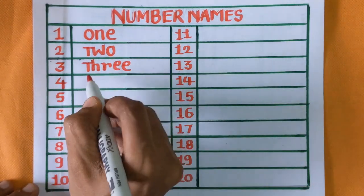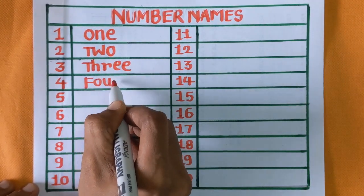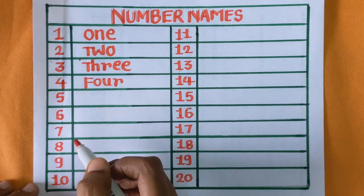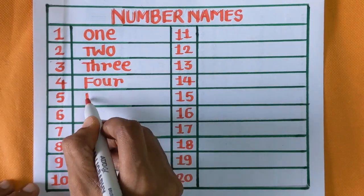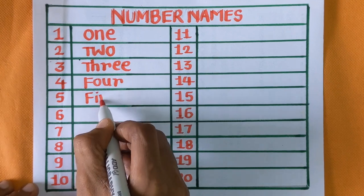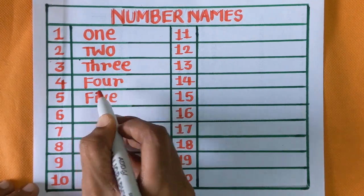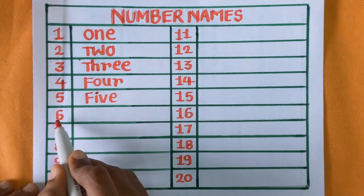Four, F-O-U-R, four. Next number is number five, F-I-V-E, five. Next is number six.